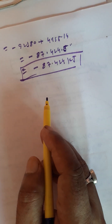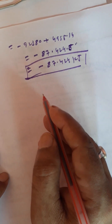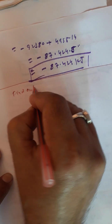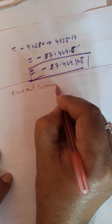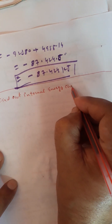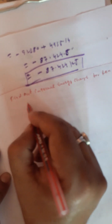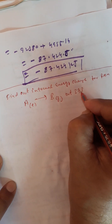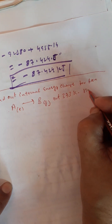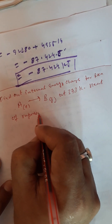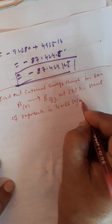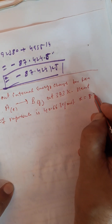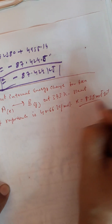जब आपको formula में सारी चीज़ें निकालनी आ गई तो question बिल्कुल simple है। अब एक question था जो PMTA 2011-12 में पूछा गया था। Find out internal energy change for the reaction: A(l) → B(g) at 373 K. The heat of vaporization is 40.66 kJ per mole and R = 8.3 J per mole per Kelvin।